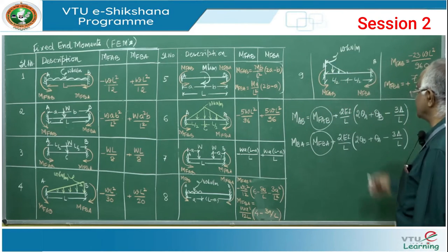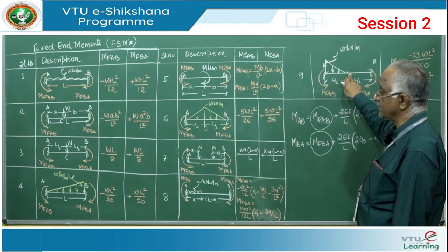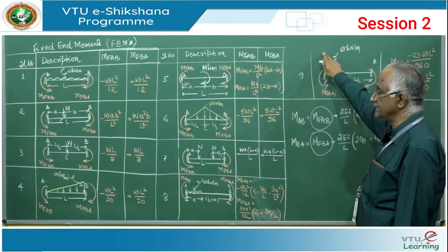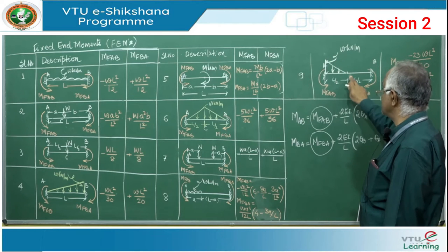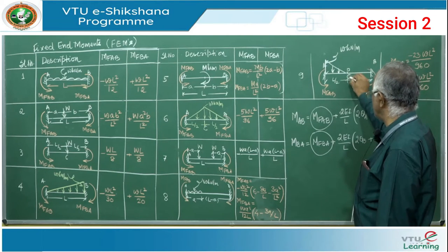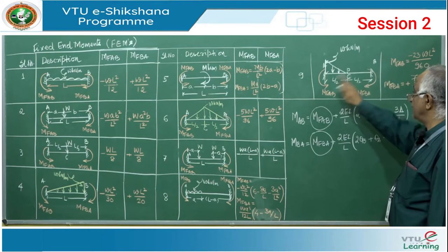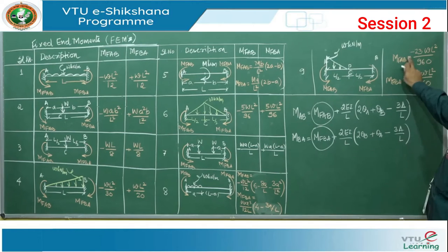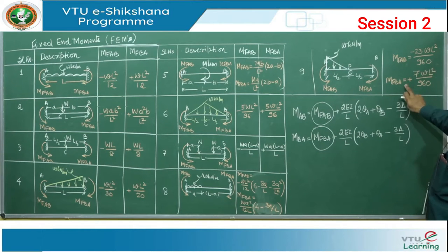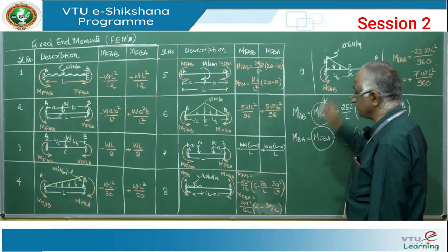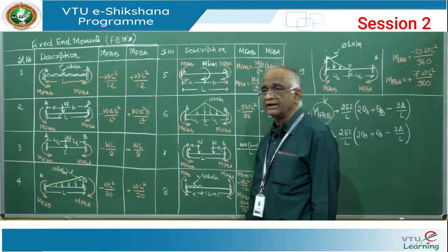For a triangular load over half the span with maximum W kN/m at the left support and zero at mid-span: M_FAB equals minus 23WL²/960 and M_FBA equals plus 7WL²/960. All these terms correspond to the first term (M_F) in the slope deflection equation.